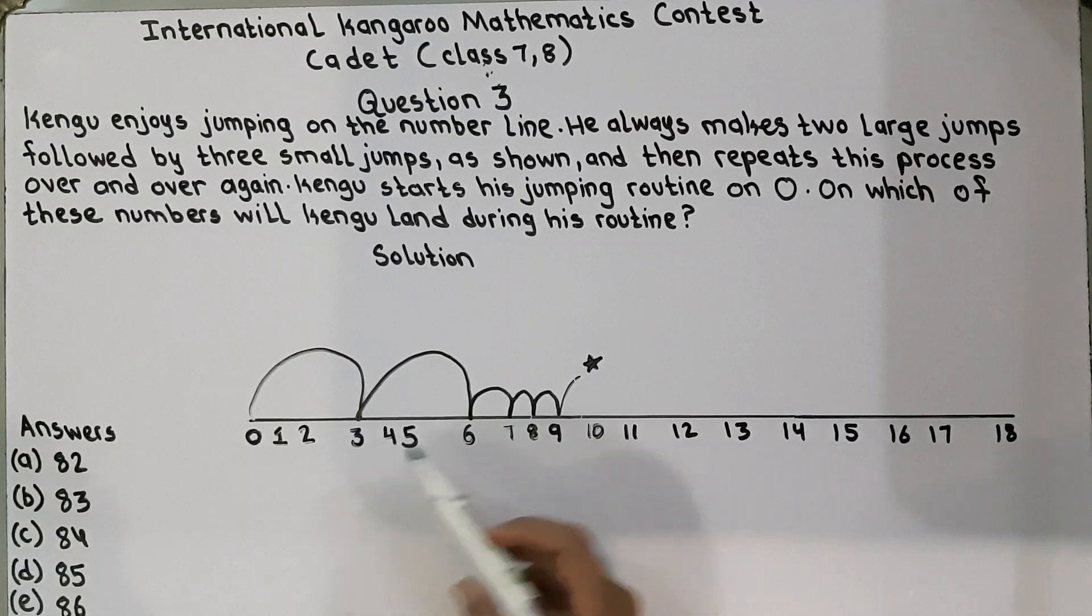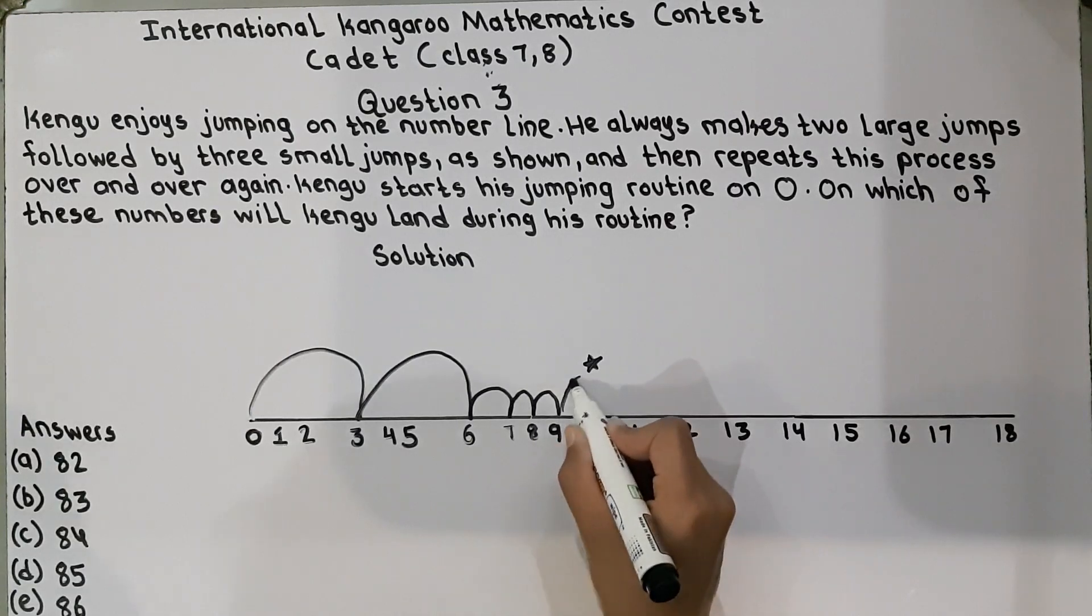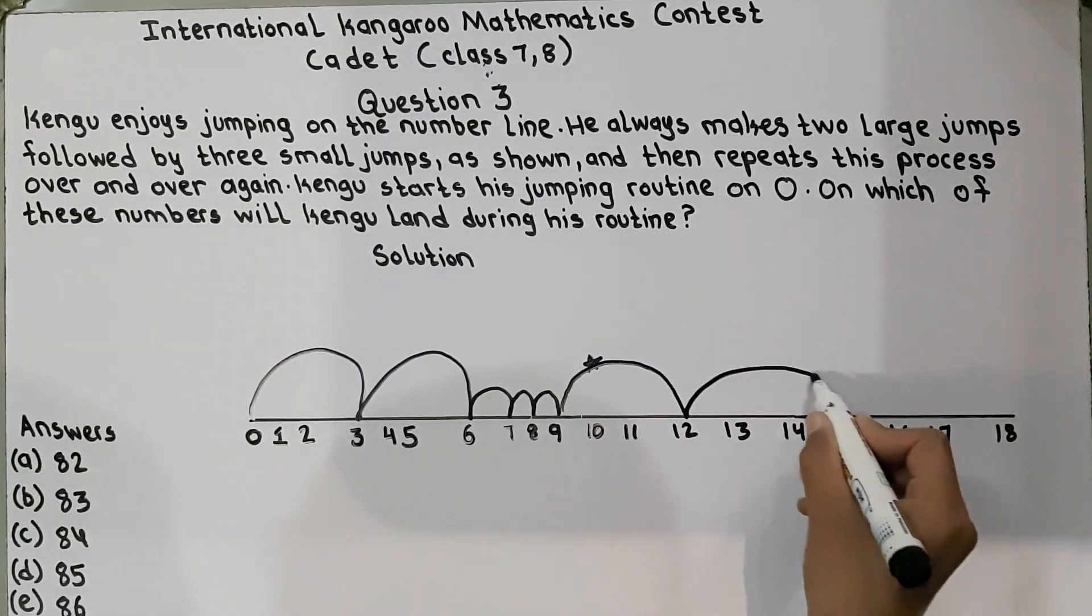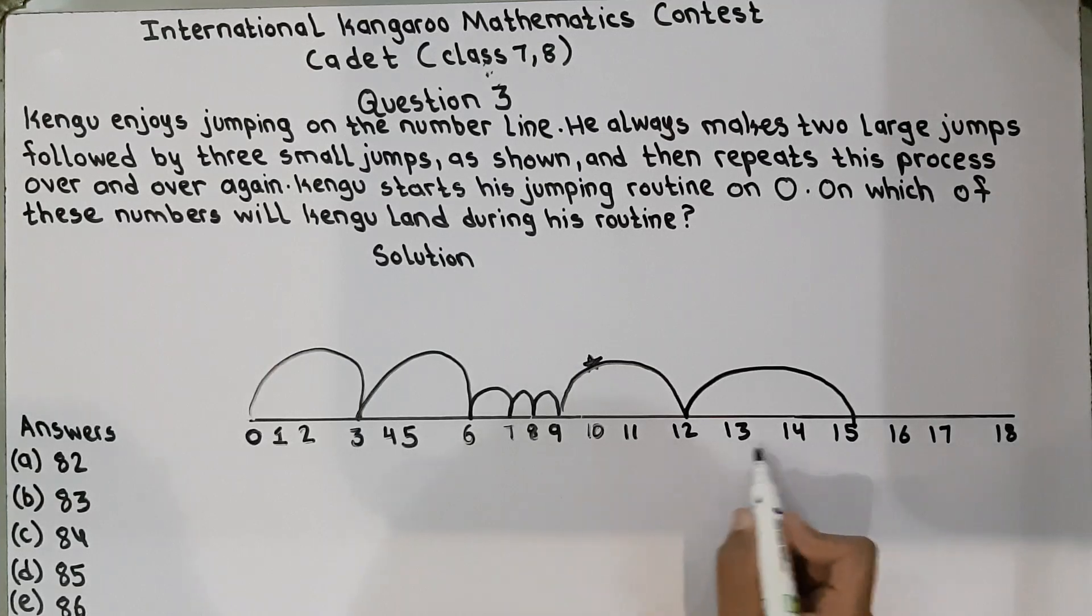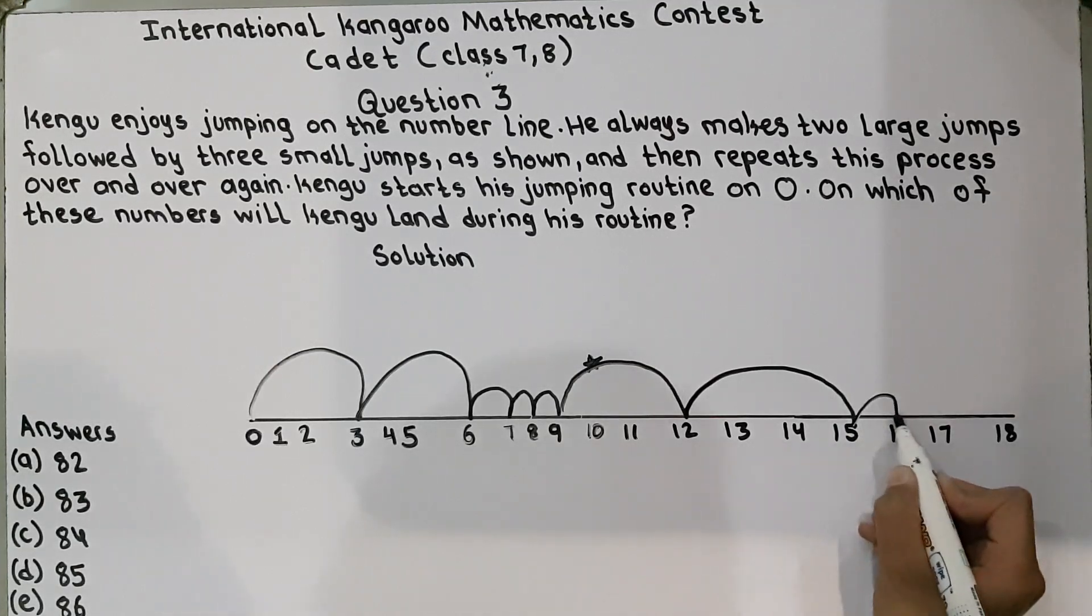So the kangaroo after three jumps, he again will make his two jumps. So these two jumps will come here and will come here. After leaving two numbers, three jumps and again three jumps.